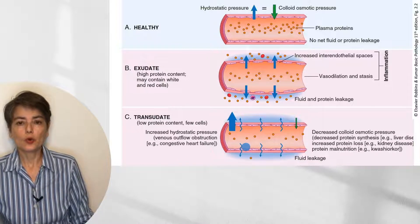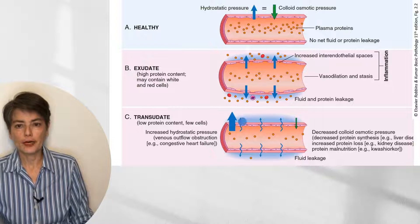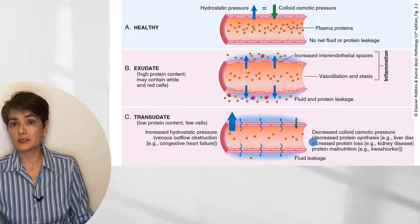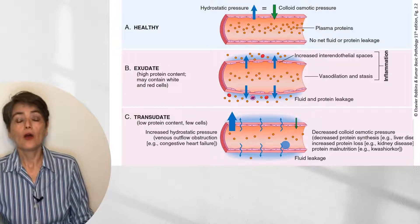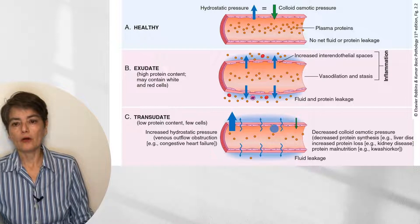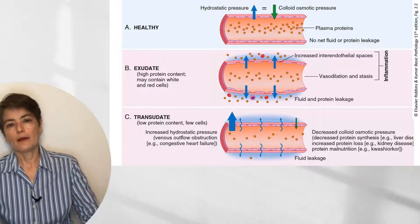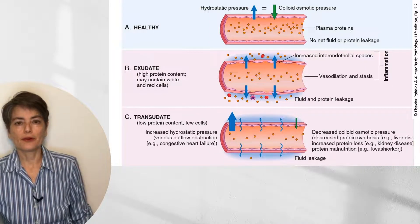Decreased colloid osmotic pressure happens with decreased protein synthesis, for example in liver disease; increased protein loss in kidney disease; or protein malnutrition. There is no longer protein in the vessel pulling water in, therefore water will leave. Now back to our regularly scheduled program.